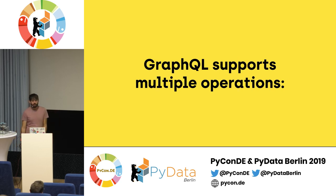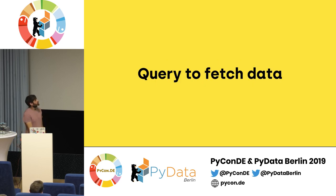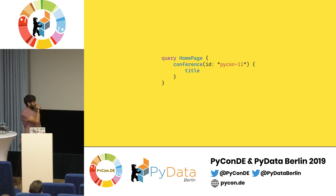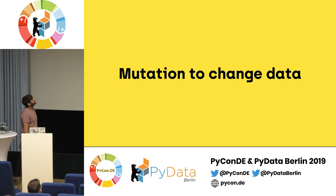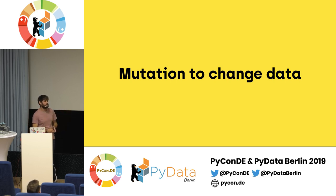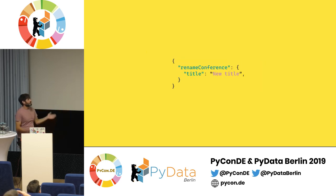With REST, you use HTTP verbs to do different things — GET to fetch data, DELETE to delete, POST to create, and so on. In GraphQL, you use operations to express different concepts. You have query to fetch data — you get a conference with that ID and return the title. And we have mutation to change data, which is a way to do operations that have side effects, like renaming something, deleting something, or creating a new user. For example, we can have a mutation that renames a conference — we pass an ID and new title, and get back the title. You don't really have to learn different things to do different operations.